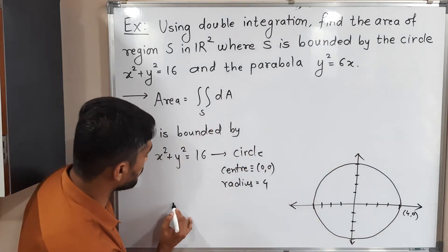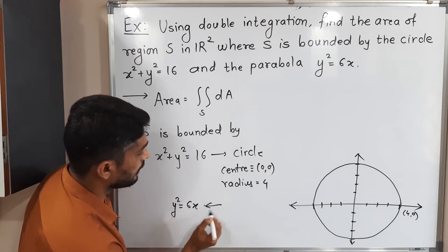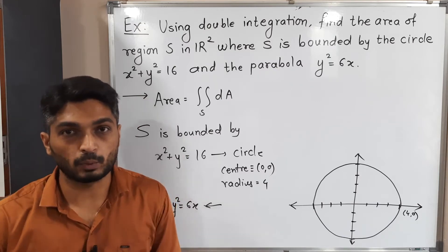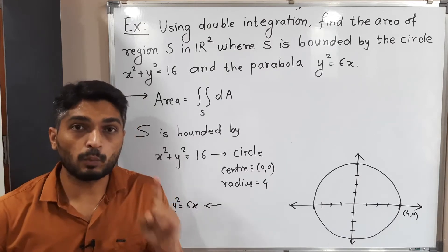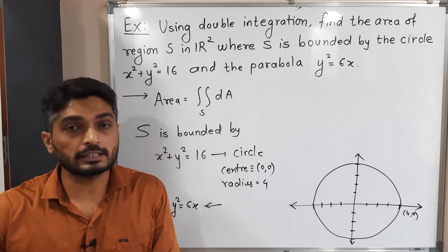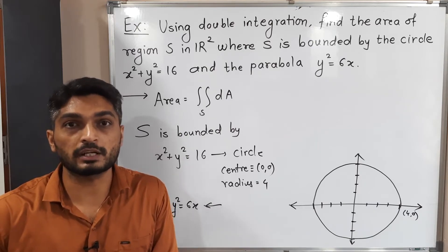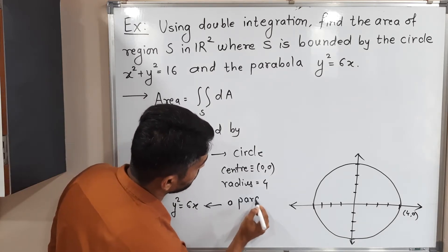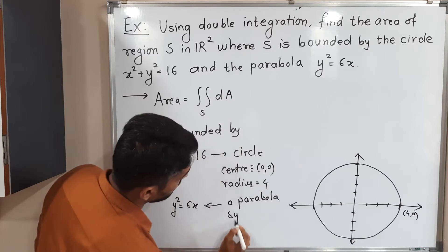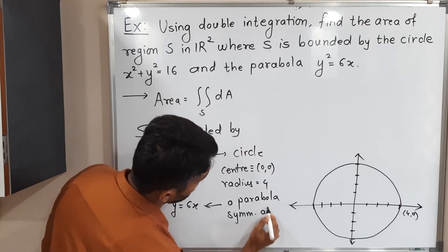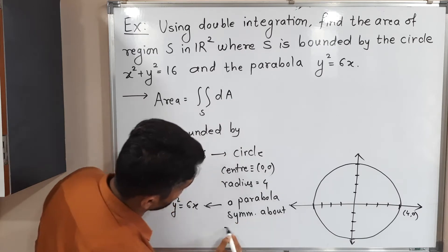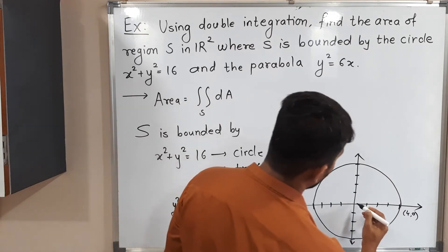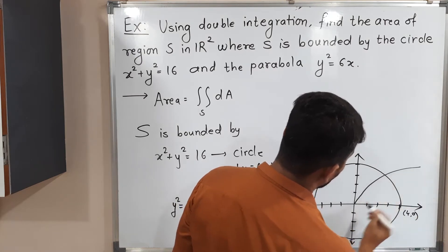The second curve is y² = 6x. The power of y is 2 and the power of x is 1, so 100% it is a parabola. Since x has power 1, the parabola is symmetric about the x-axis, and it has a positive sign so it is symmetric about the positive x-axis.